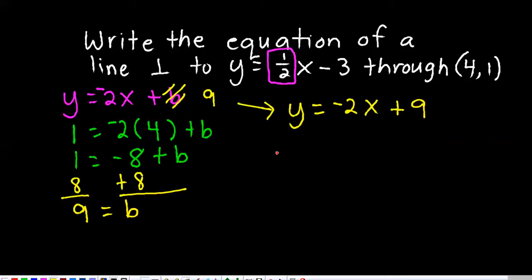So, you could just do this. This would be really easy. y minus this y value, 1, equals, and you know that the slope, if the original slope was 1 half, the perpendicular line would have a slope of negative 2, and then x, and then it's going to be minus 4.